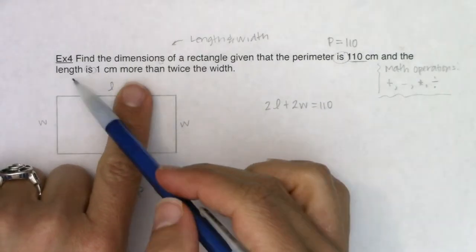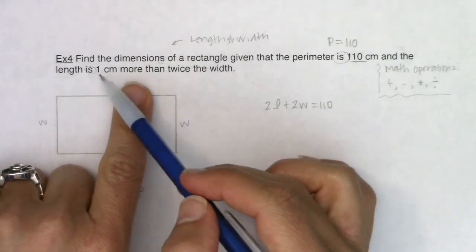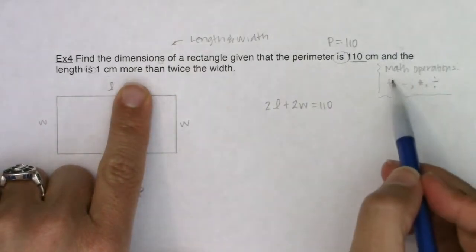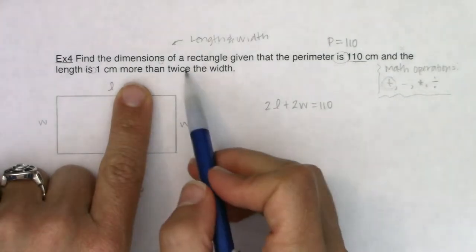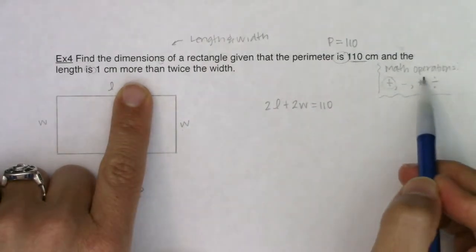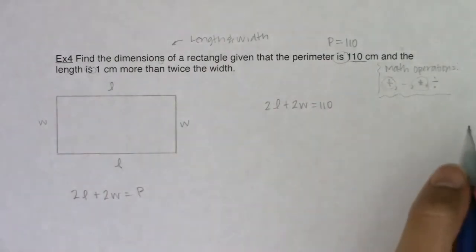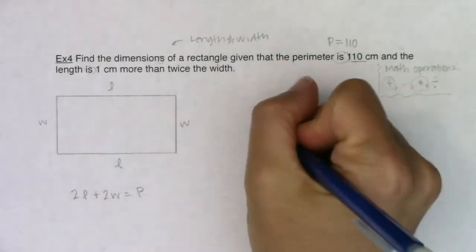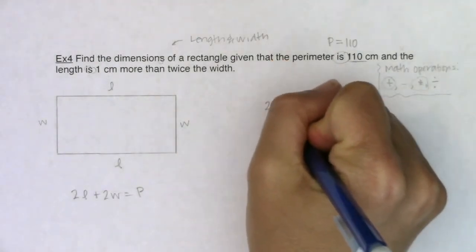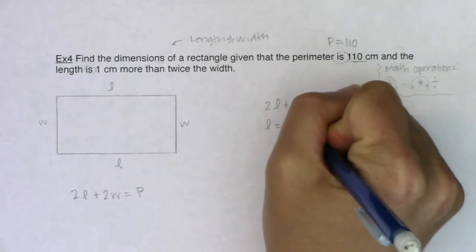So let's see if we can figure this out. We know we have the length and an equal sign, but one centimeter more, that's referencing addition. Twice the width, that's referencing multiplication. We're doubling something. So I know the length is one more than twice the width.